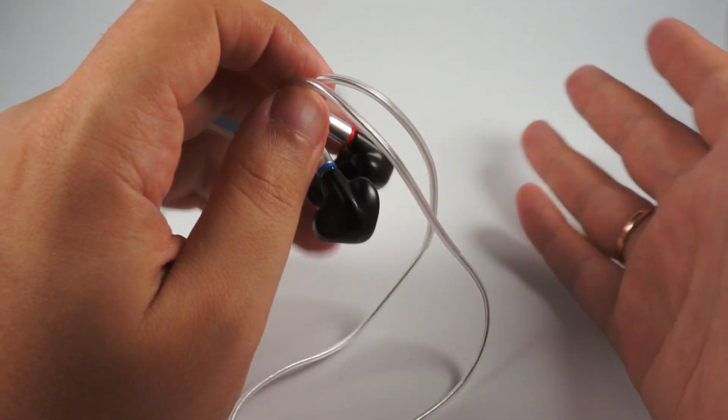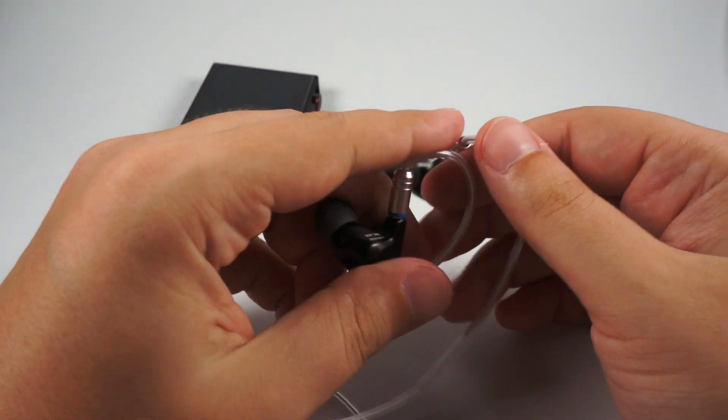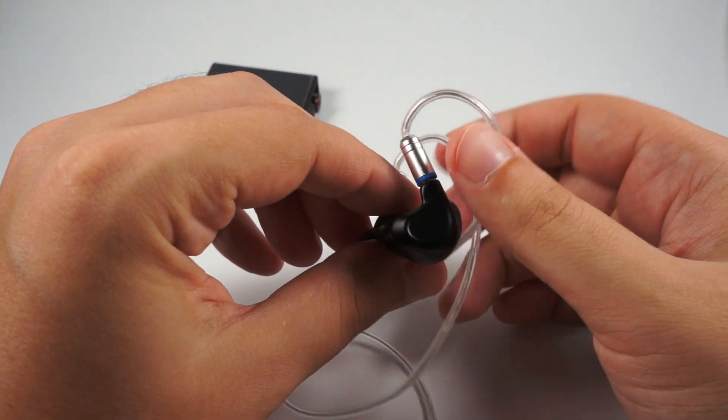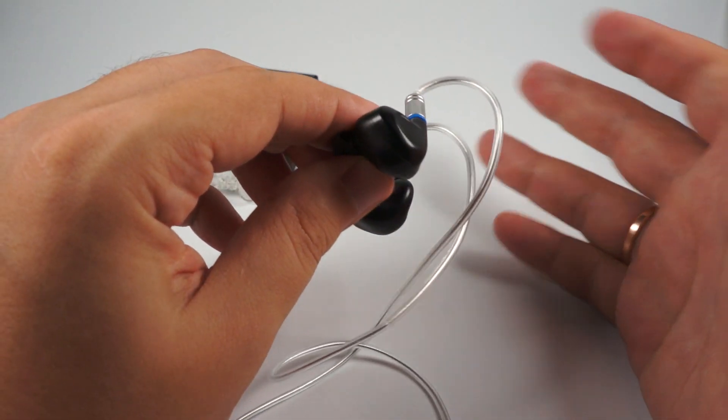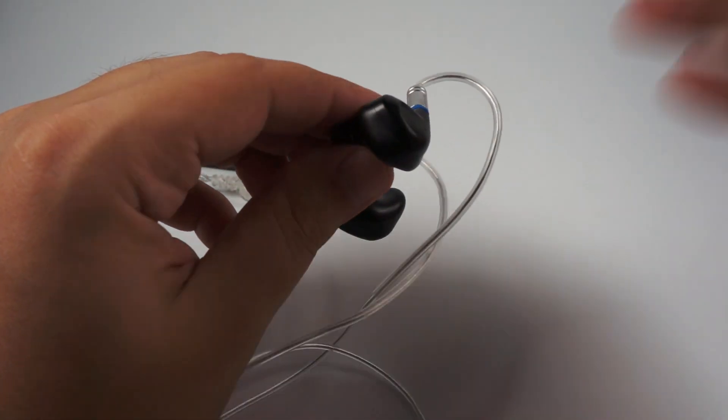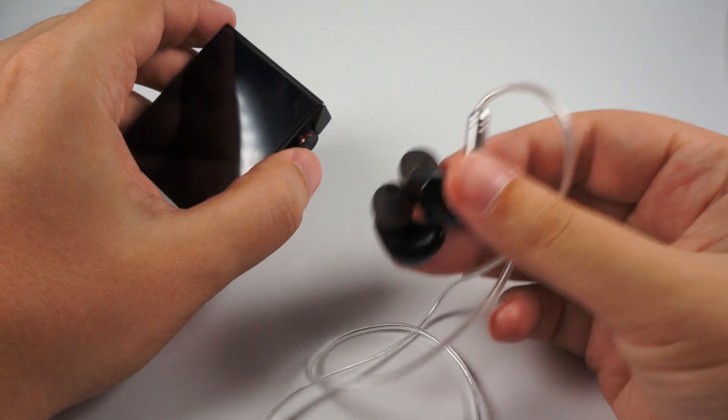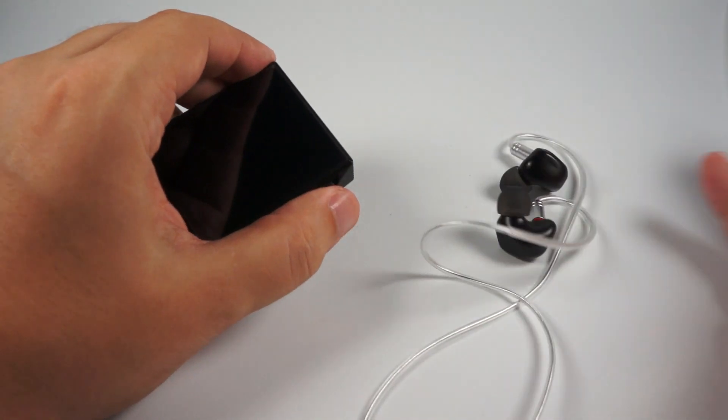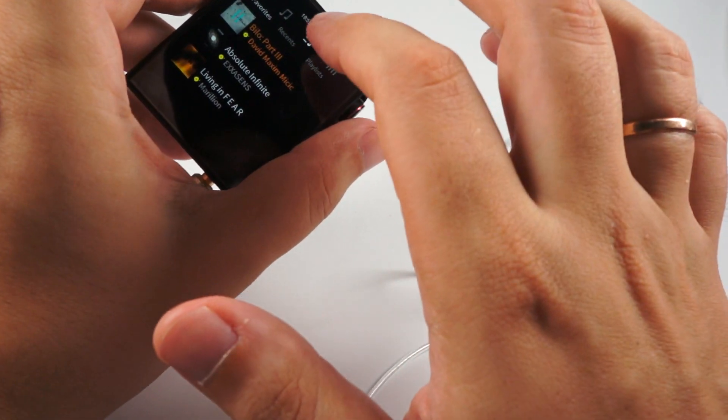And treble - it's typical treble of good dual balanced armatures made by Knowles. You probably know what to expect here. They are extended, they have good extension, they are clean, crisp, clear. If you are treble-phobic, probably you should listen to this model before buying. And I'm okay with treble, I even like treble, not too much, but I like when it's not shy. And it's really good with normal attacks, normal decays, with basic layering of treble, with normal resolution. So, you know, just everything that you can probably expect from good treble.